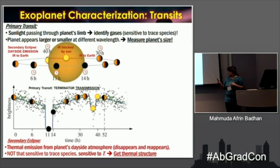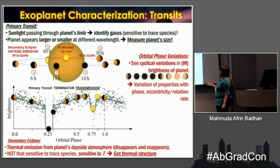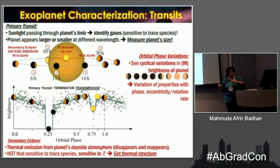As the planet goes behind the star, the thermal radiation is blocked and then it comes out — this process is the secondary eclipse. From this data, we can actually get the thermal structure of the planet. There's another thing you can do: if you look at the phase curves as the planet goes through different phases, just like the moon, this allows us to do meteorology. We can see the cyclic variations in the thermal phase curve — the thermal brightness of the planet — and assess variation of properties like eccentricity, and that's also a rotation rate measurement. We also have a speaker who will talk about that.